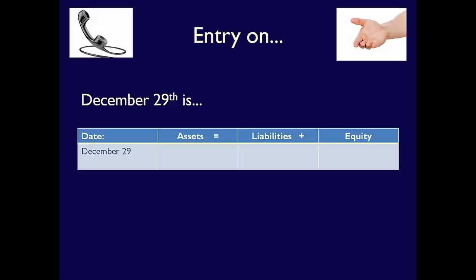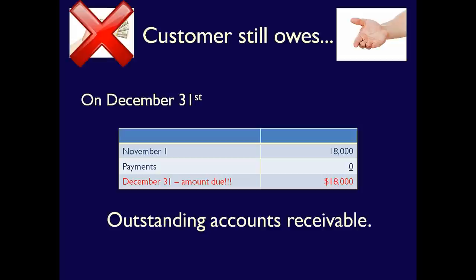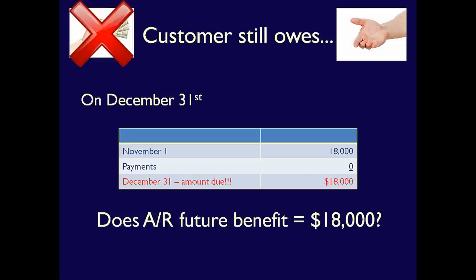On December 29, after repeat phone calls, the customer has still not paid. What is the entry? Nothing — there has been no exchange. Now we're at year-end, December 31, 2014. Accounts receivable for this customer is $18,000. Should we put that $18,000 on the balance sheet as an asset with future economic benefit? Does it really have a future economic benefit equal to $18,000? That's questionable, because this customer seems to be having problems paying their bills.